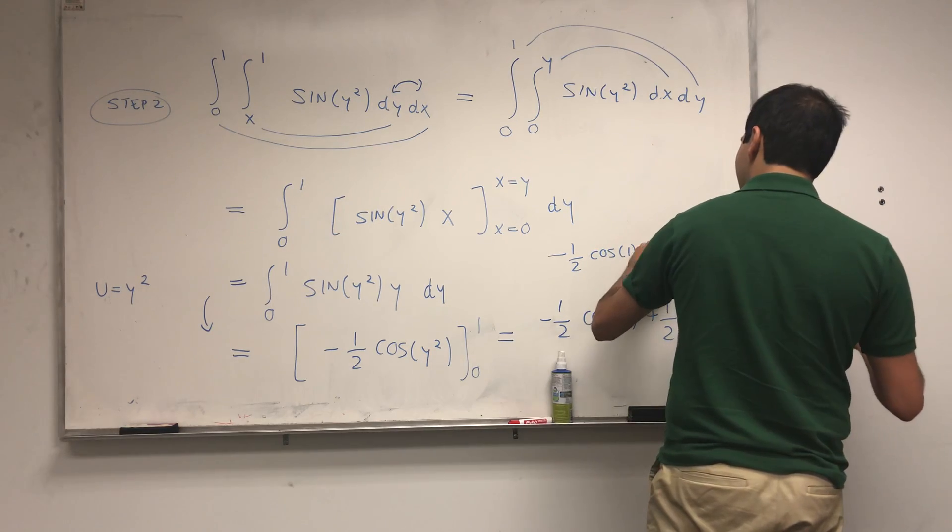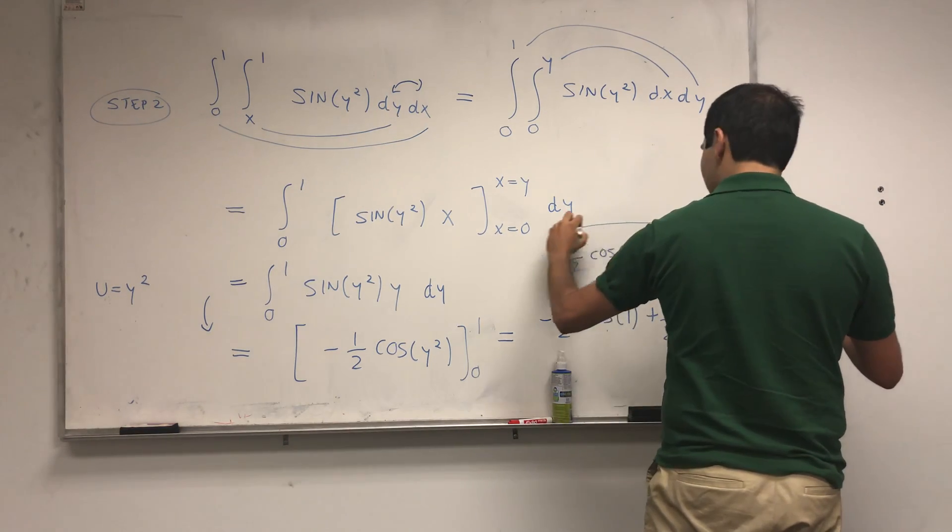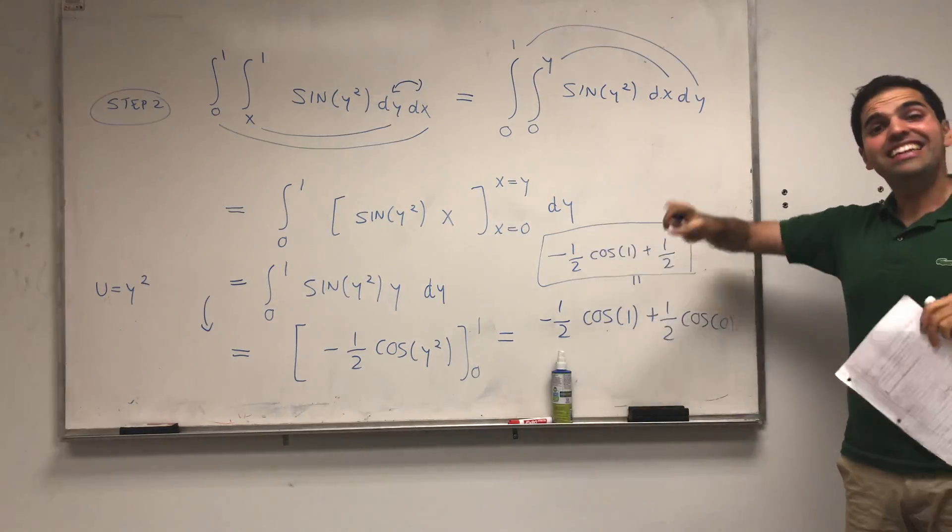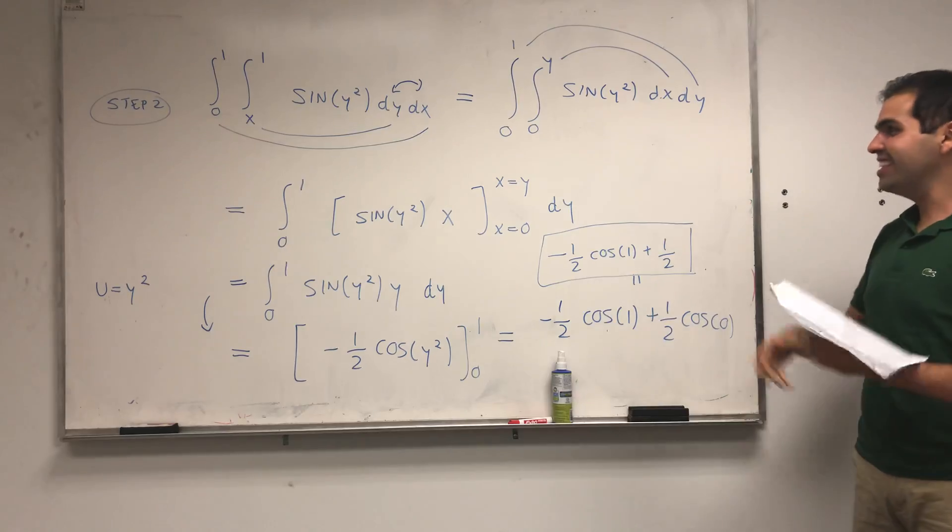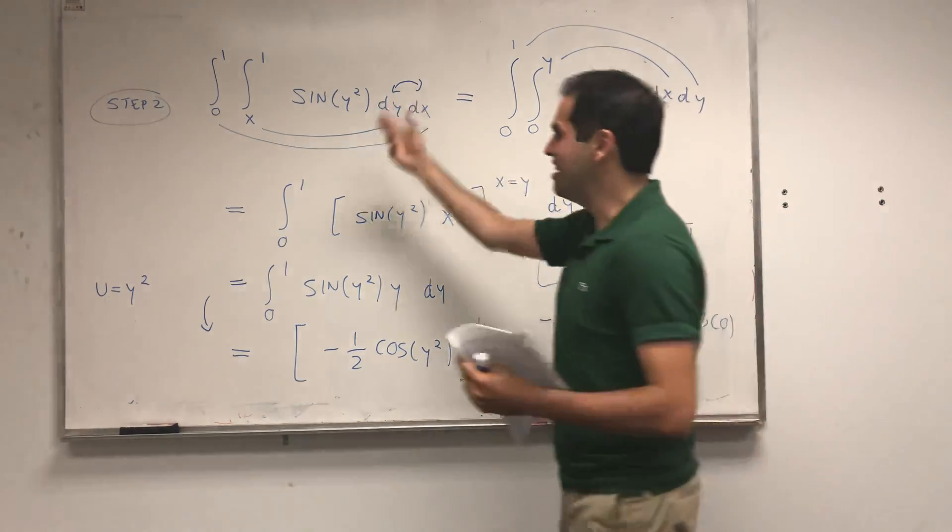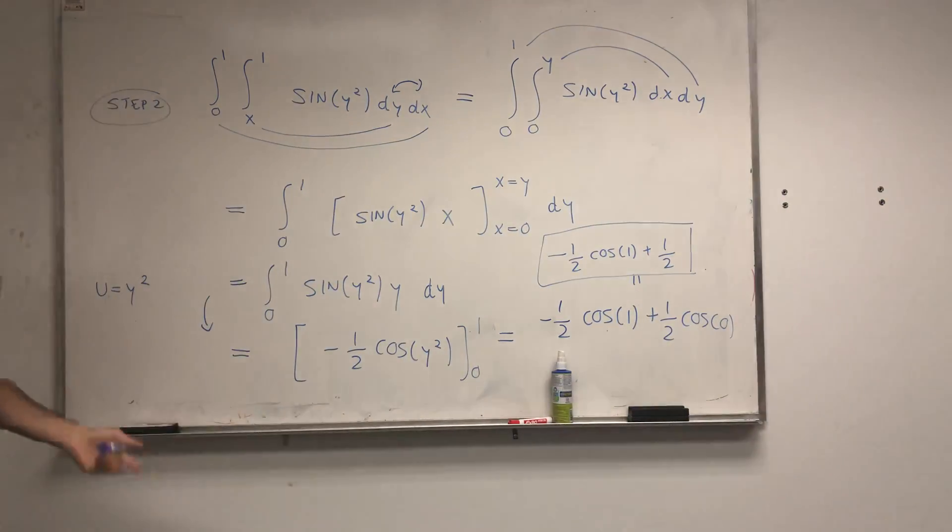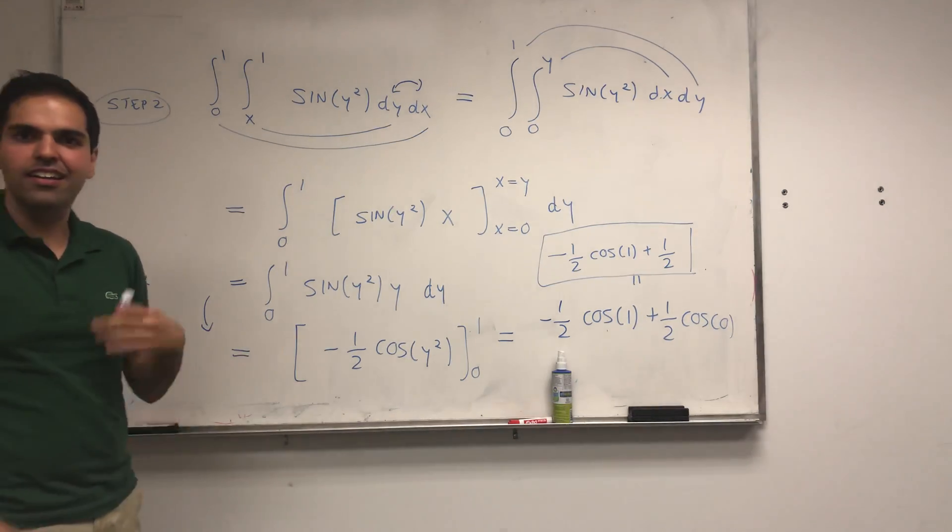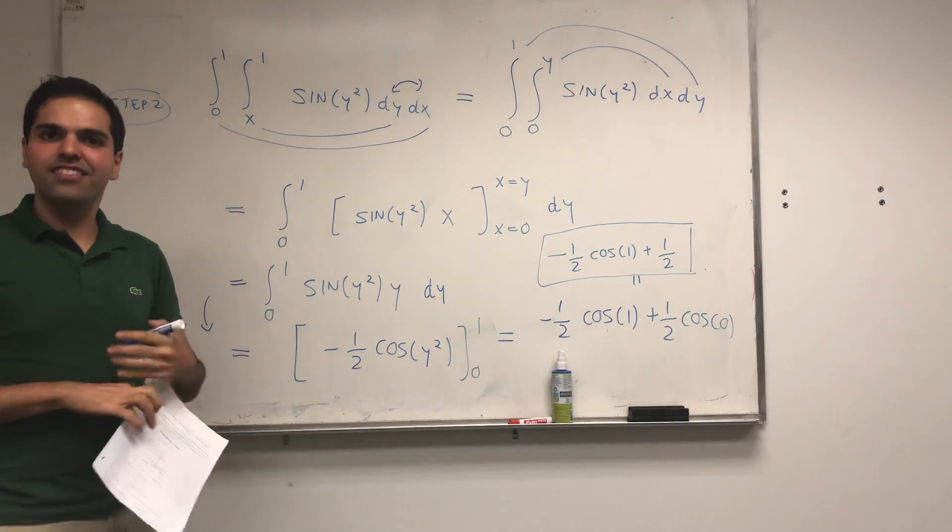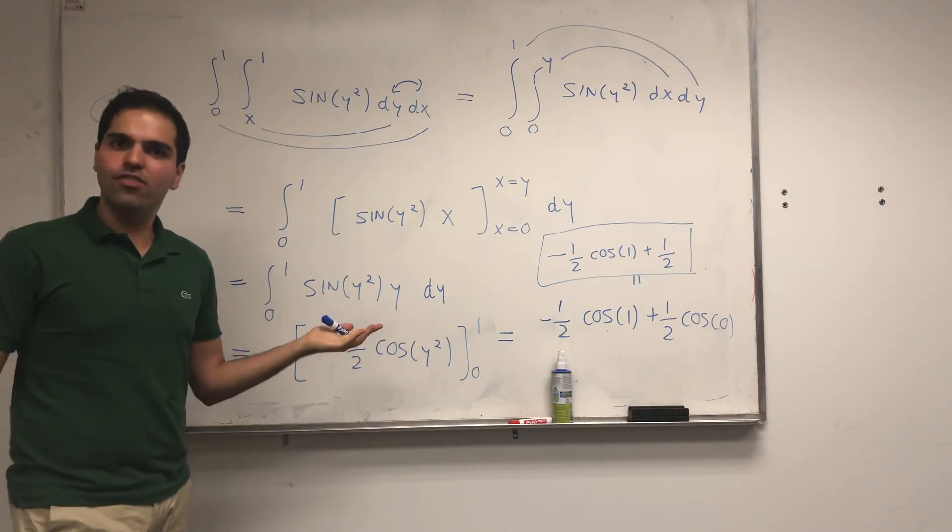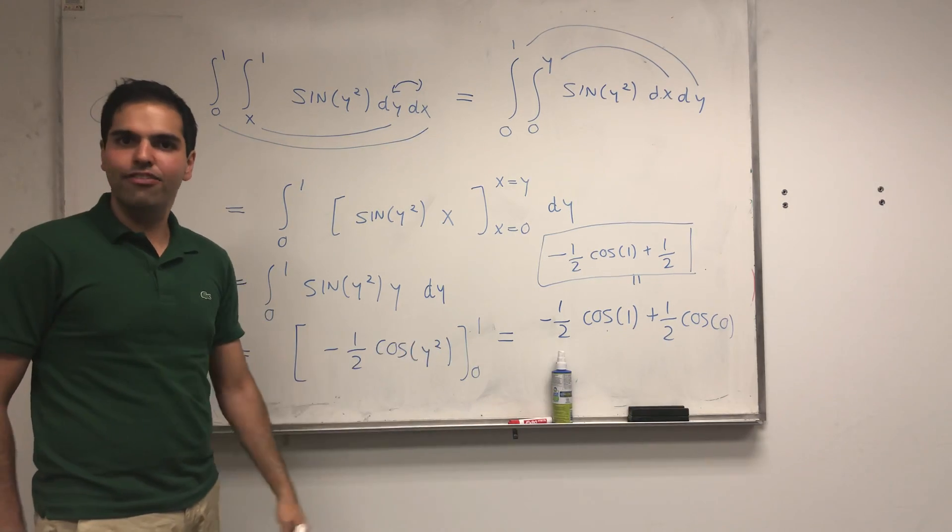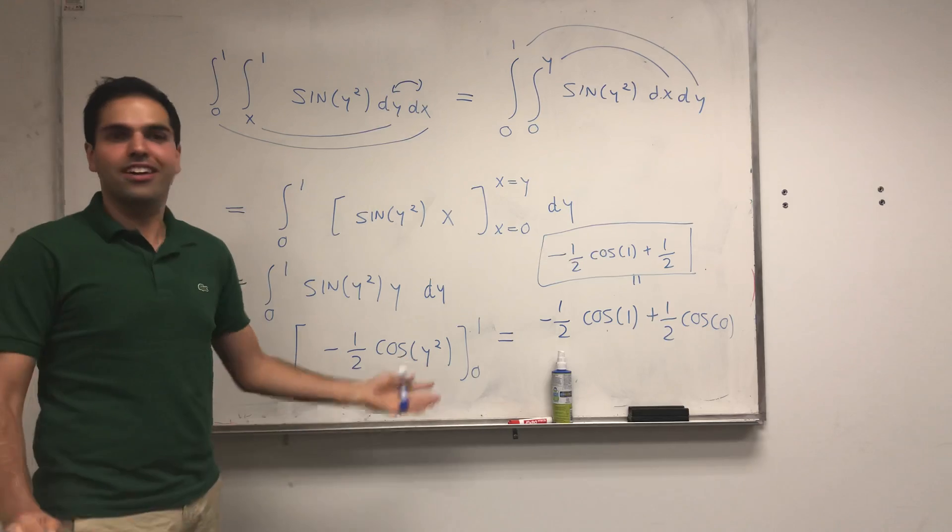So you see just by interchanging the order of integration you were able to evaluate an impossible integral. And this is very cool and also I believe this shows how multivariable calculus is so much stronger than single variable calculus, because in single variable calculus when you had a function that you couldn't anti-differentiate you were just stuck and you were just crying all night, hopefully not.